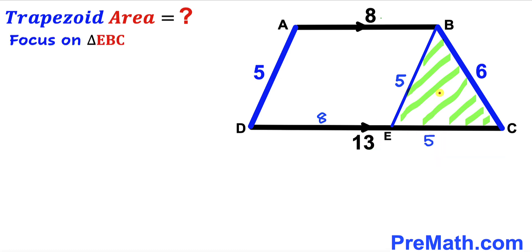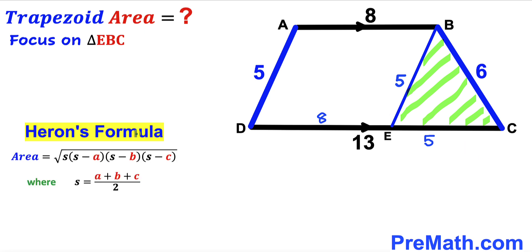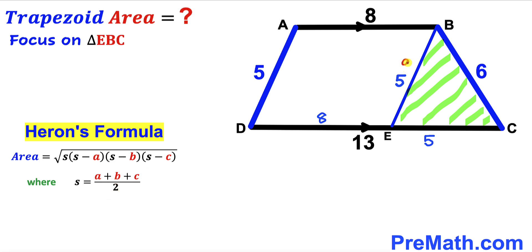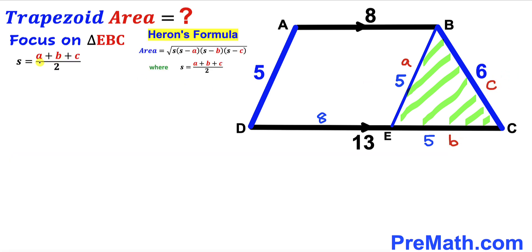Now let's focus on triangle EBC and calculate its area. We are going to apply Heron's formula to calculate the area of triangle EBC. The formula is the square root of S times (S minus A) times (S minus B) times (S minus C), where the semi-perimeter S equals A plus B plus C all over 2. I'm going to label the sides lowercase A, B, and C.